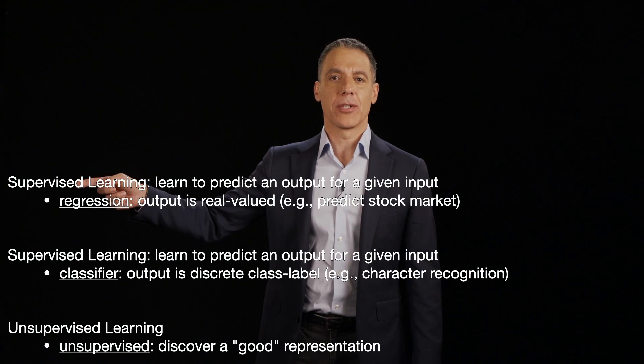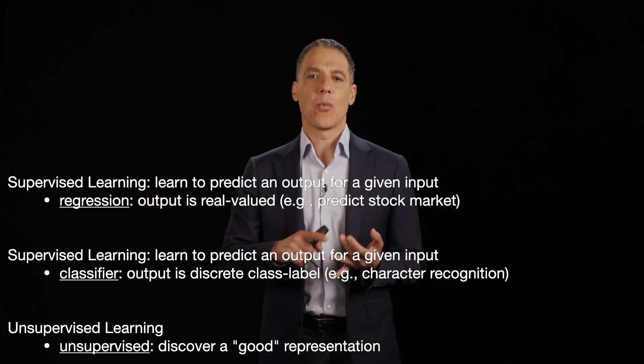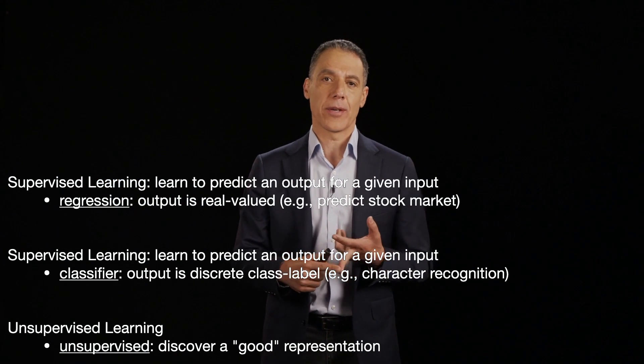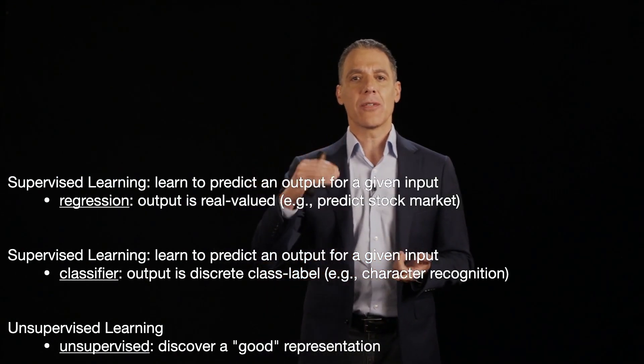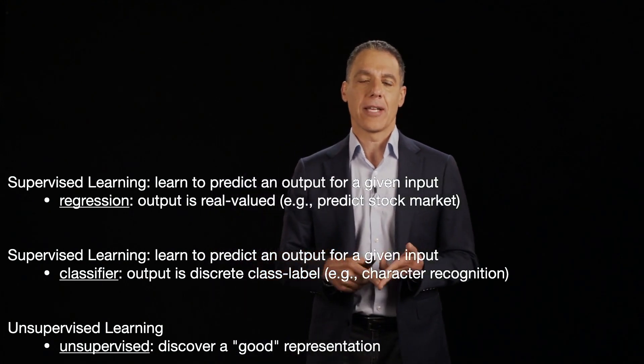There's the supervised learning regression. We've seen a number of those. We've seen least squares, weighted least squares, total least squares, and then we saw a series of different iterative least squares: steepest descent, conjugate descent, and gradient descent.